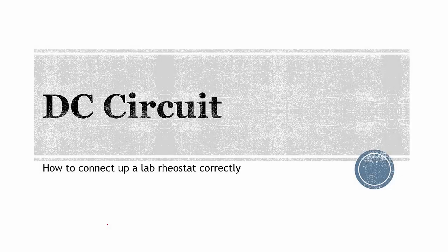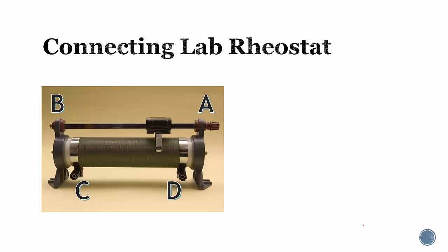In this lesson, we're going to show you how to connect a rheostat correctly in the lab. This is a lab rheostat labeled A, B, C, D, which are the connecting points. To cut the long story short, connect at point A and point C. You have a wire, connect it here, and another wire here. This is the correct way of doing it.